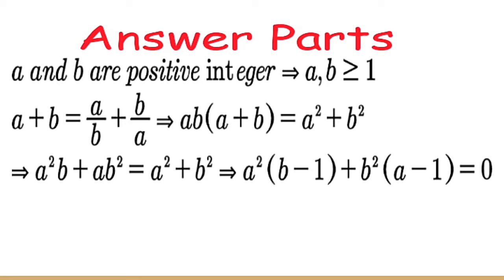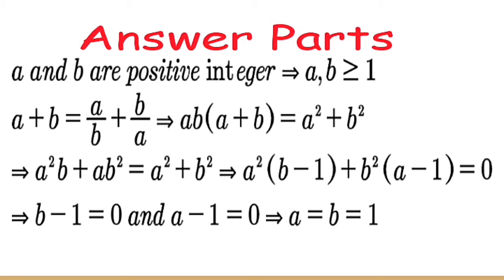Now, since b and a are integers with b greater than or equal to 1 and a greater than or equal to 1, then b minus 1 is greater than or equal to 0 and a minus 1 is also greater than or equal to 0. That means a squared times (b minus 1) equals 0 and b squared times (a minus 1) equals 0. Since a and b are integers, a squared and b squared cannot be 0. Therefore b minus 1 equals 0 and a minus 1 equals 0.